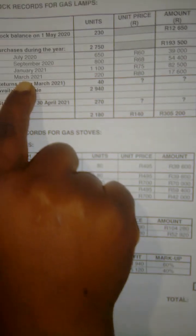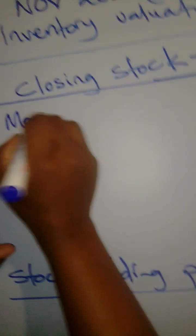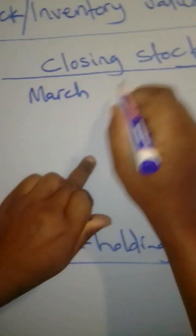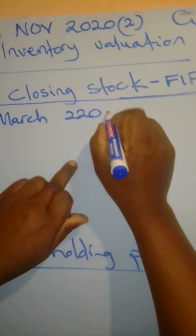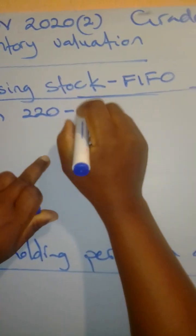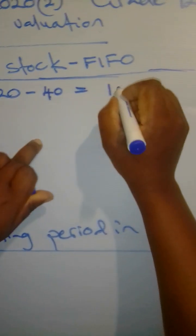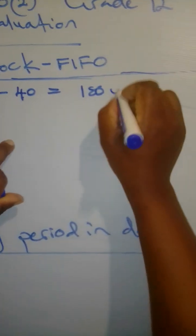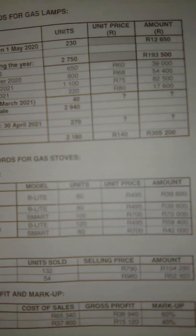Let's find out exactly how many items we have from the month of March. We have 220 units minus the ones that were returned — 40 units returned from March. We remain with 180 units at a price of R80 per unit.